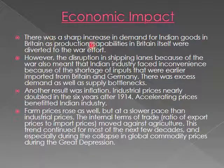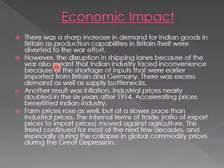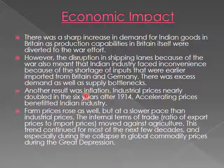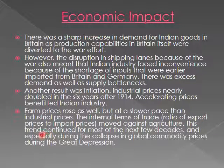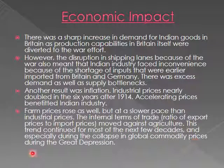Economically, there was a sharp increase in demand for Indian goods in Britain as production capabilities were diverted to the war effort. However, disruption in shipping lanes caused shortages of inputs previously imported from Britain and Germany, creating excess demand and supply bottlenecks. Another result was inflation — industrial prices nearly doubled in the 6 years after 1914. Accelerating prices benefited Indian industry, though farm prices rose more slowly, and the internal terms of trade moved against agriculture — a trend that continued through the Great Depression.